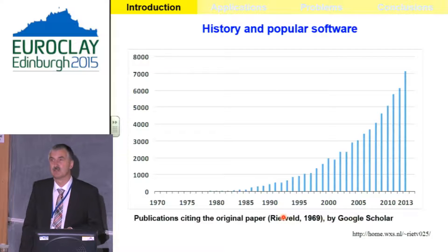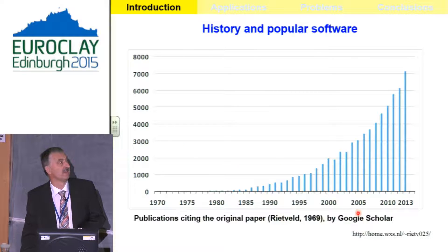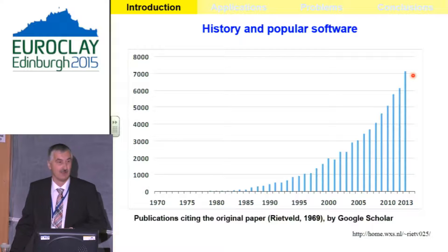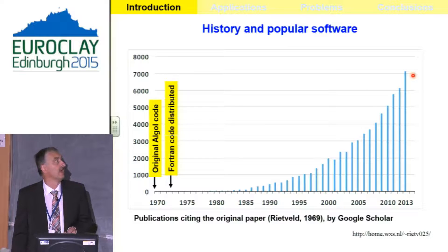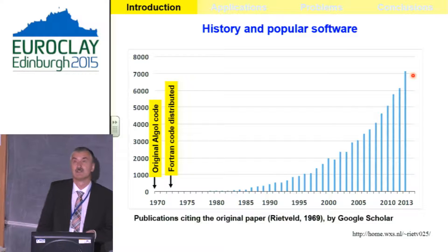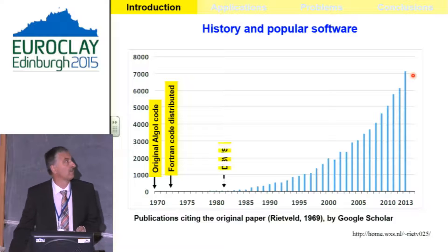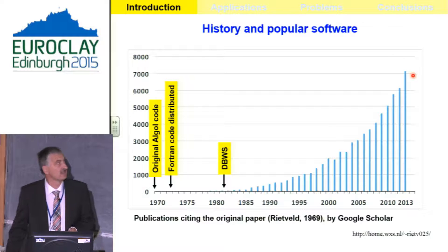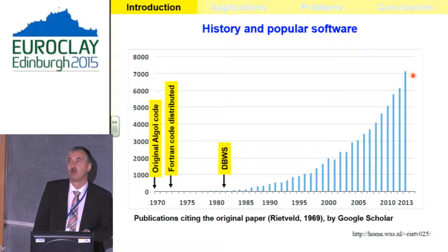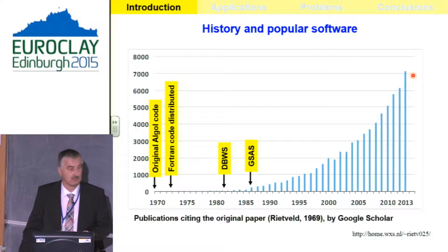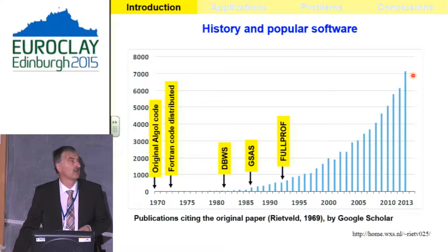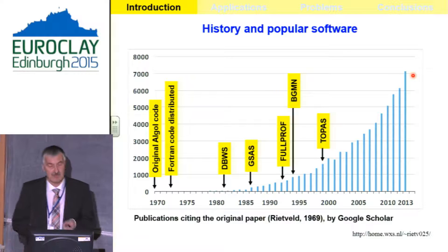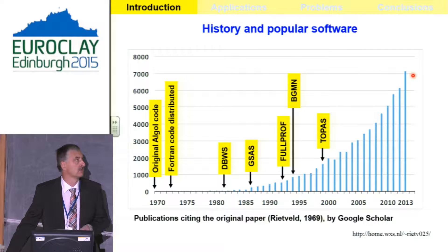The Rietveld method is highly cited — about 7,000 citations per year of the seminal paper. The original software was an ALGOL code; a FORTRAN code was distributed in 1972. Later, other software was developed: the first important one was DBWS, which extended the method to X-ray powder diffraction. Later came the General Structure Analysis System (GSAS) by Frondrela, FullProf by Rodriguez-Carvajal, BGMN by Jörg Bergmann, and Topaz by Alan Coelho, among many other important programs.